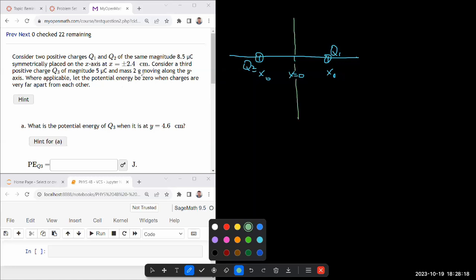Consider a third positive charge of some magnitude and some mass moving along the y-axis. We're told that potential is zero at infinity, that's the standard universal reference point. So let's say the q3, at some point, it's at this point. Let me call that y-naught. And we are given the value of 4.6 centimeters. And it asks, what is the potential energy of q3 at that point?